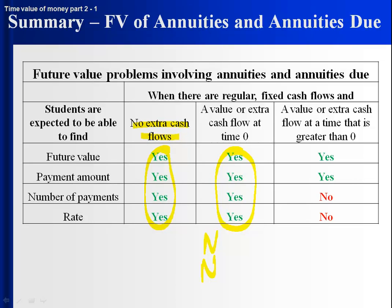Now suppose we have a value or an extra cash flow at a time greater than zero — meaning not at time zero but later on. Then we're limited in some of the things we expect students to be able to do. We would expect to find the future value: you've got your regular payments, and you've got some extra payment. You would simply find the future value of the extra payment, find the future value of all the payments associated with the annuity or annuity due, and just add them up. That's the future value — if we make regular savings and also make an extra savings at some point, how much will we have at the end? Just add them up.